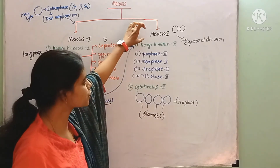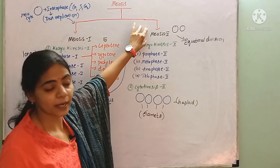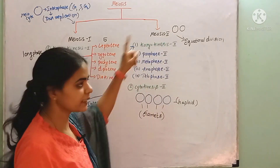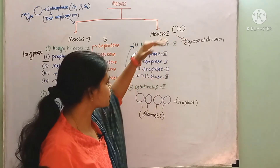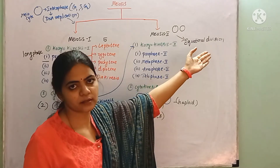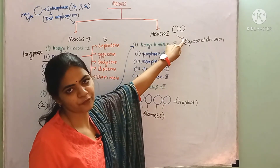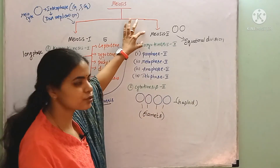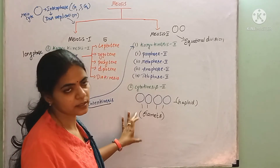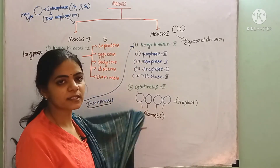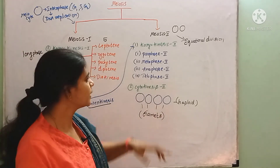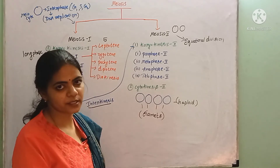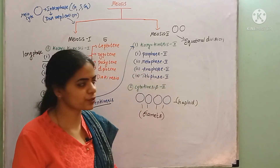Meiosis II is similar to mitosis — it is an equational division. The daughter cells produced are exact copies in terms of chromosome number; the same number of chromosomes as their parent cells entering Meiosis II. So Meiosis II is similar to mitosis, with two steps: karyokinesis II and cytokinesis II. Karyokinesis II has four phases: Prophase II, Metaphase II, Anaphase II, and Telophase II.